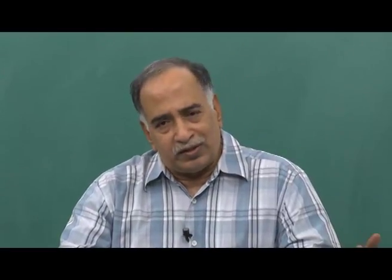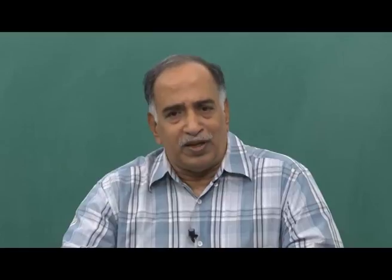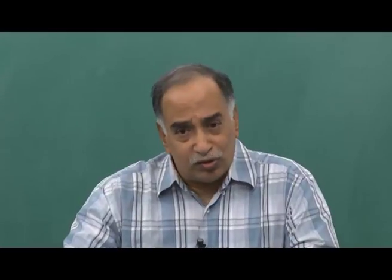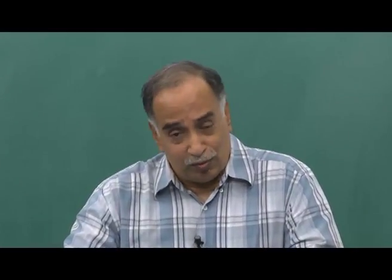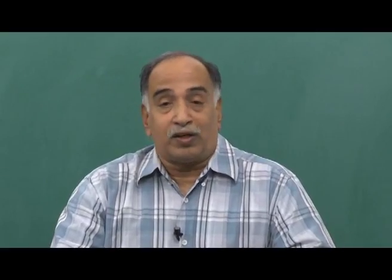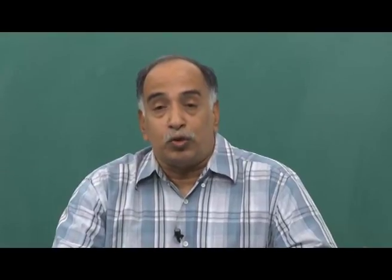One issue is flood irrigation, which is very prevalent in agriculture. Now water shortages have come up — how do you feed the plant? This is what we are talking about as mid-course corrections. The water supply and demand need to be balanced. That means irrigation water should always be available, or based on the availability of water, your irrigation quantity should be balanced accordingly.